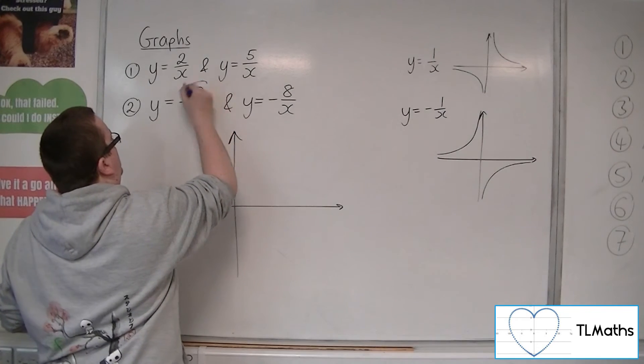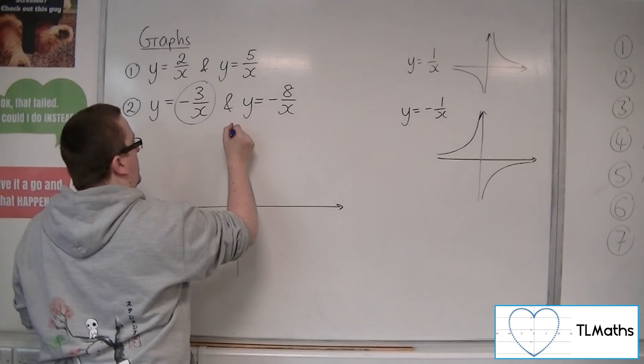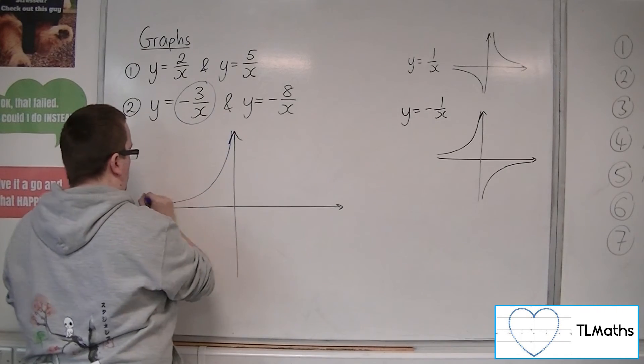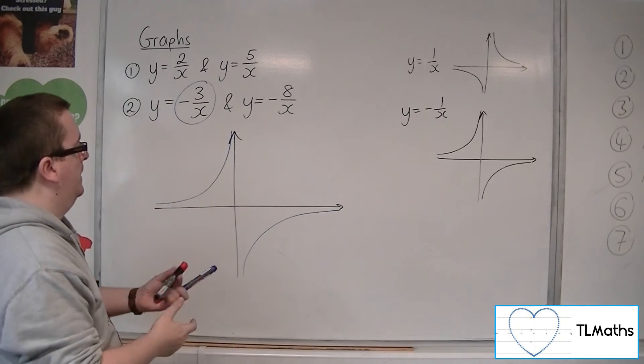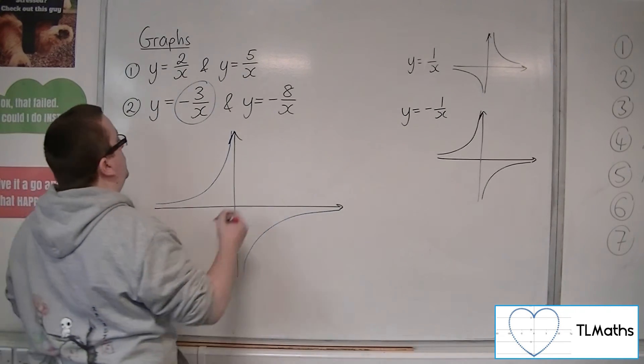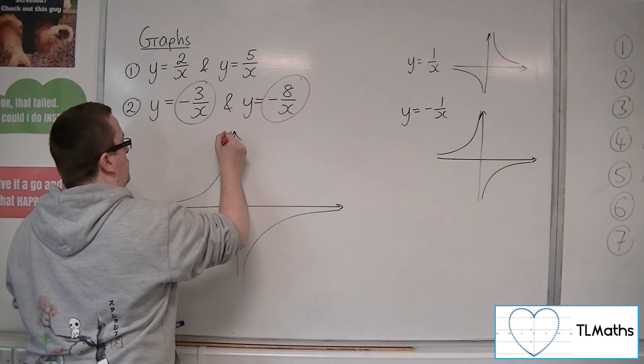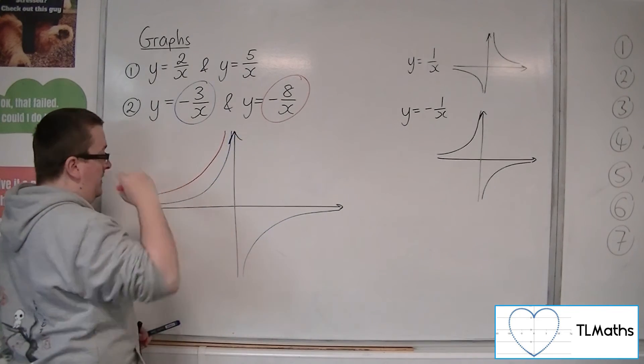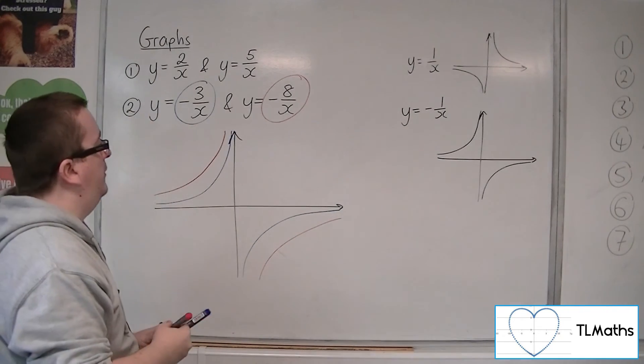So if I've got to sketch y equals minus 3 over x and y equals minus 8 over x, let's say that this is my blue graph. So the blue one will look something like that. And the red one, minus 8 over x, will be stretched above it. Like so.